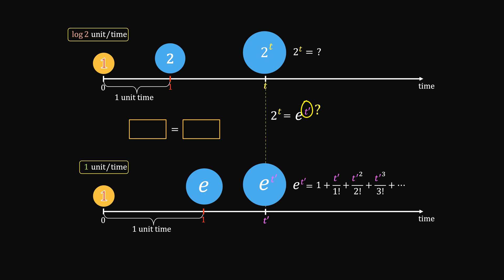In the first system, it produces log 2 times t. In the second system, it produces 1 times t prime. Hence, t prime is log 2 times t.